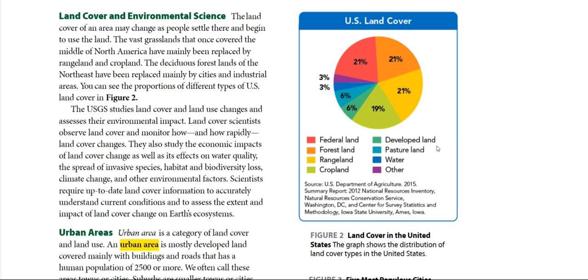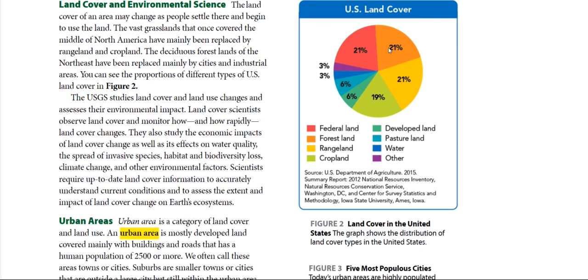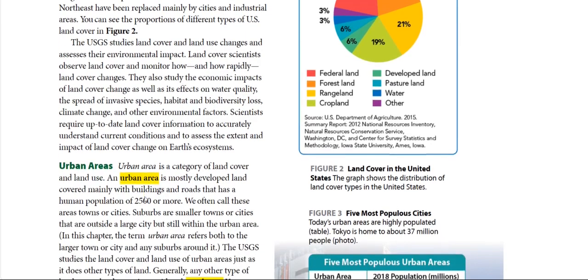Looking at the U.S. land cover map, we have developed land shown in green, water, forest land shown in orange at 21 percent, federal land also at 21 percent, and others at 3 percent.